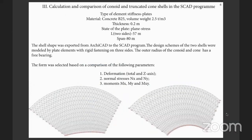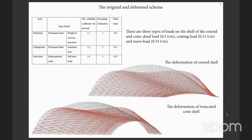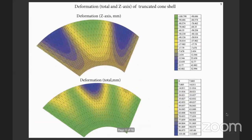The shells mentioned above were modelled in the ARCHICAD program and exported to the SCAD program for further calculation. The design schemes of the two shells were modelled by plate elements with rigid fastening on three sides. The outer radius of the conoid and cone has a free bearing. Deformation, normal stresses, and moments were analysed. Three load types were applied for the calculation: dead load, coating load, and snow load. Deformation schemes are presented on this slide along the Z axis, and the total deformations are also analysed.